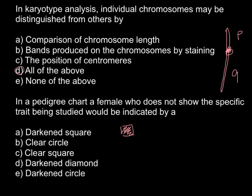Answer E: A darkened circle would also mean a female who is affected. A darkened diamond is used, for example, if a couple has a child of unspecified gender — if we don't know the gender of the child, we use a diamond. A filled diamond would also mean the child is affected with some genetic disorder or trait.